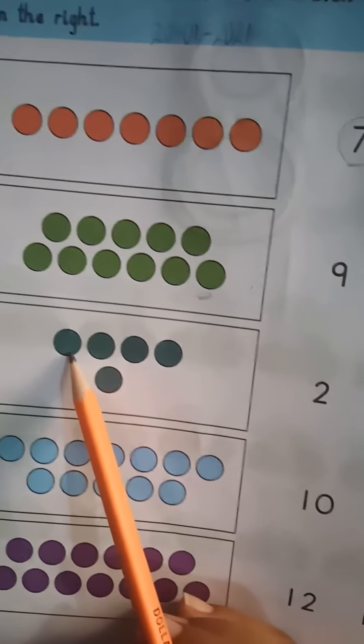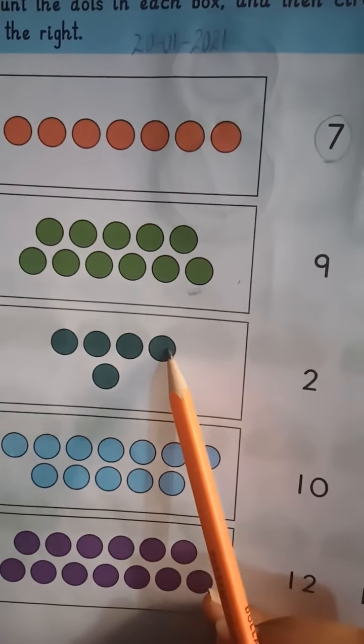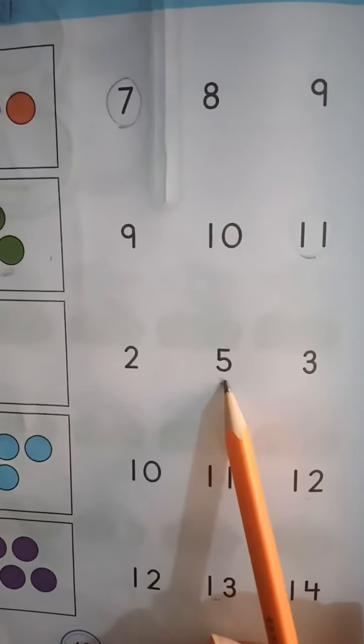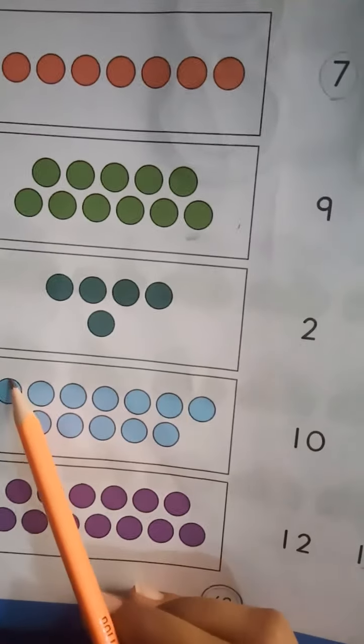Next, count the dots. One, two, three, four, five. So here number five is what we are going to circle.